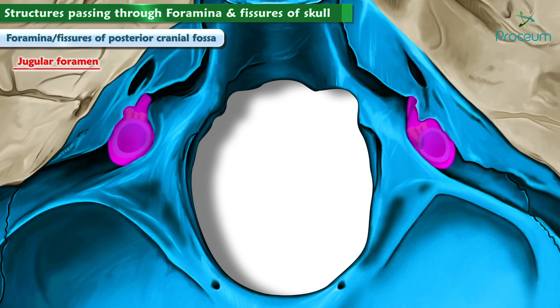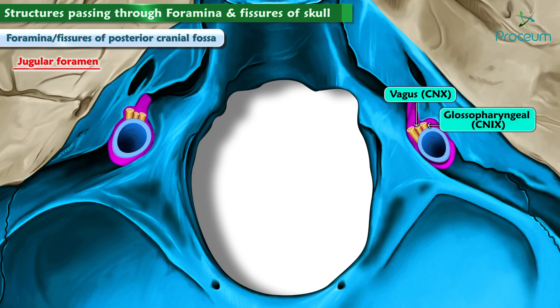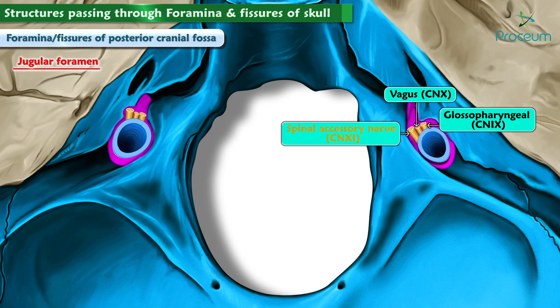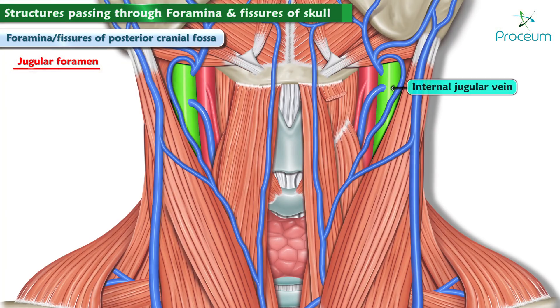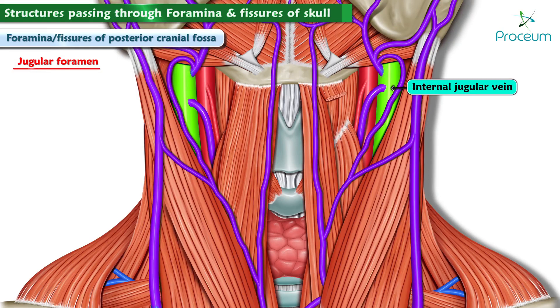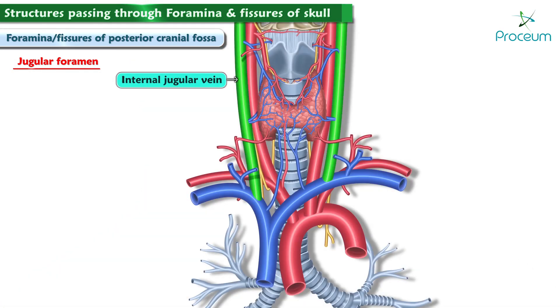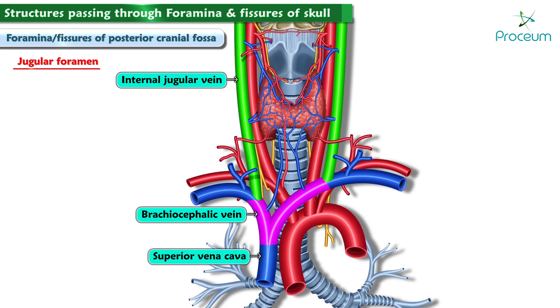The jugular foramina allow passage of the ninth, tenth, and eleventh cranial nerves — namely the glossopharyngeal, vagus, and spinal accessory nerve, respectively. The jugular foramina also allow the vein for which it is named to exit: the internal jugular vein, which drains much of the blood from the head and parts of the neck down into the brachiocephalic vein, which eventually forms the right side of the heart via the superior vena cava.